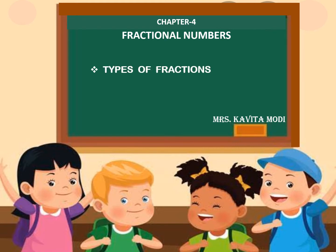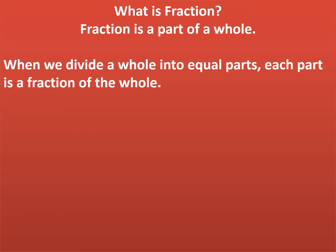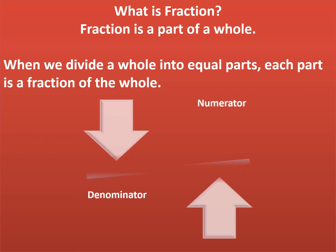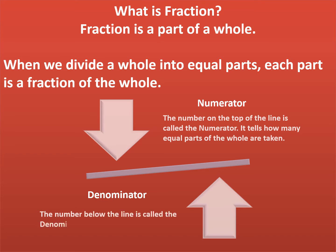In this chapter, our topics are Types of Fractions and Fractions in the Lowest Terms. A fraction has two parts. The number on the top of the line is called the numerator. It tells how many equal parts of the whole are taken. The number below the line is called the denominator. It shows the total number of equal parts.